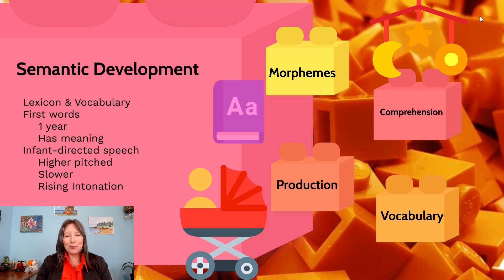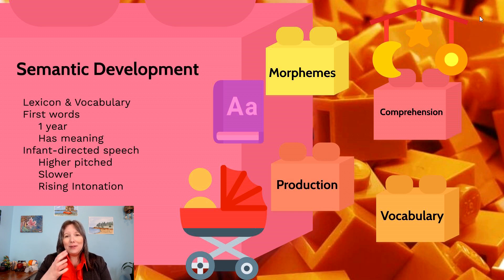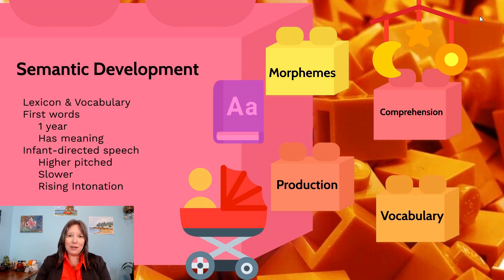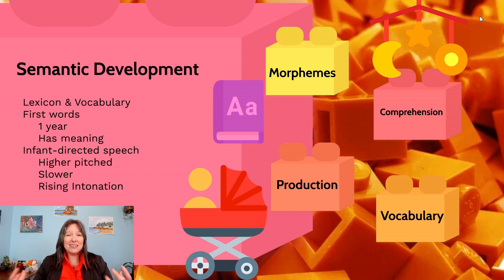On average, our first word tends to happen around our first birthday, and different things can speed this up or slow this down. Once we learn that first word, different things can help us along. One of the most important things to help with our semantic development is infant directed speech, which has had lots of other names over the years — sometimes called baby talk or motherese.